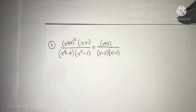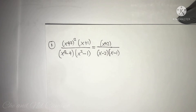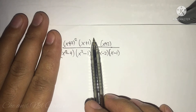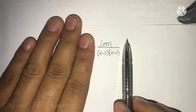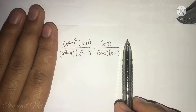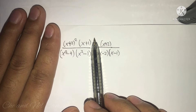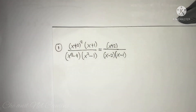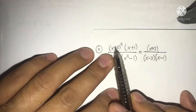Before we assign values of x to find a counter example — whether the values of x are from the integers and fractions — before doing that, we are going to first do some proving. We are going to prove if the equation itself is truthful for all the time. We will simplify the left part of the equation because it is more complicated compared to the right side.